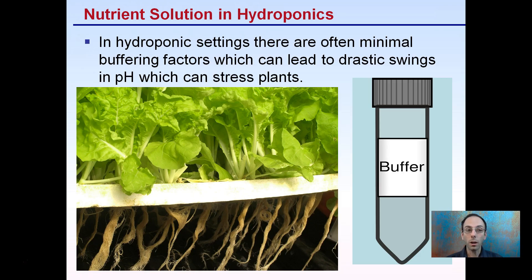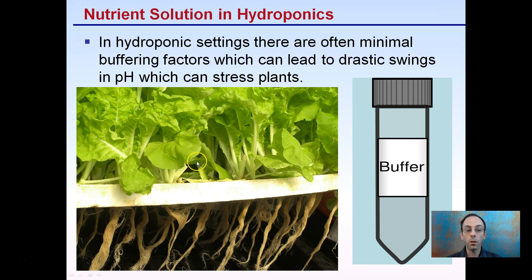In hydroponic settings, there are minimal buffering factors, which can lead to drastic swings in pH and stress plants. That's why I stress the idea of continual monitoring — without a buffer factor, pH can make large swings. When you're adding or mixing nutrients, or as roots develop, there could be a lack of buffer in that water depending on the solution you're using.